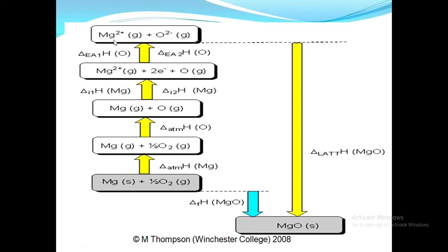When the Mg²⁺ ion and O²⁻ ion are formed in gaseous form, they react to form magnesium oxide via the indirect path, and the enthalpy change for this step is known as the lattice energy of magnesium oxide. So we have drawn the whole Born-Haber cycle and are able to attain six marks for this development.